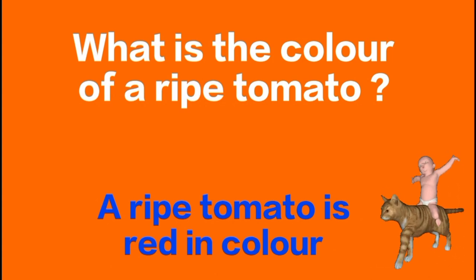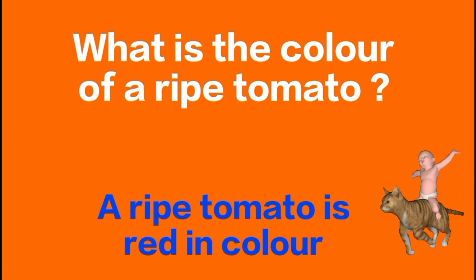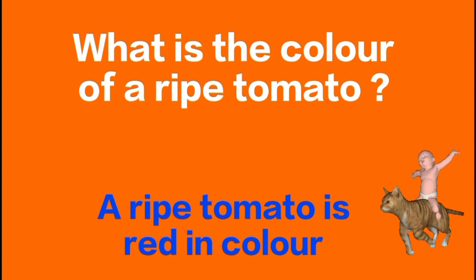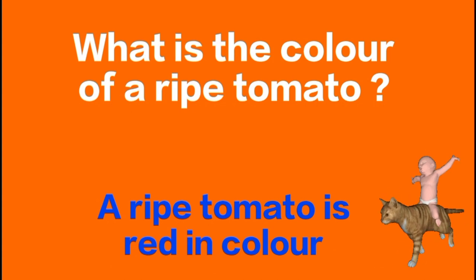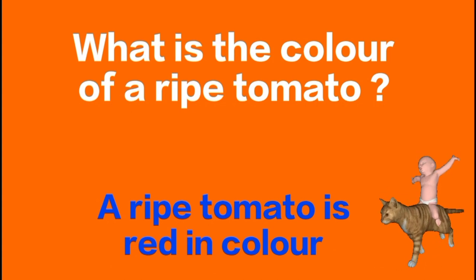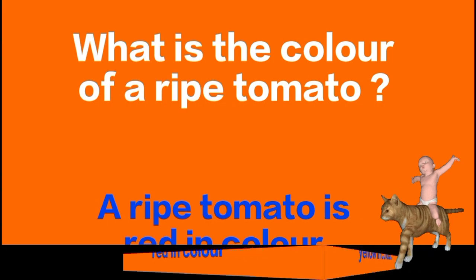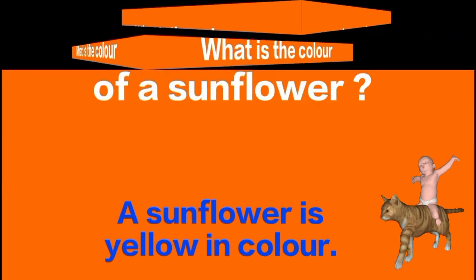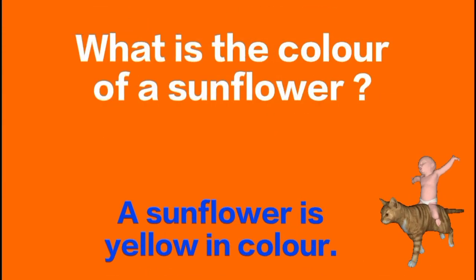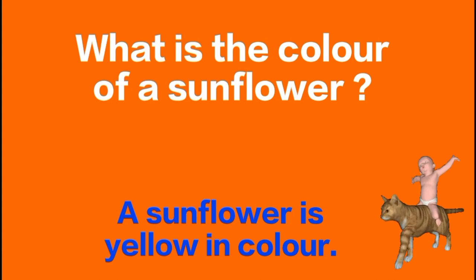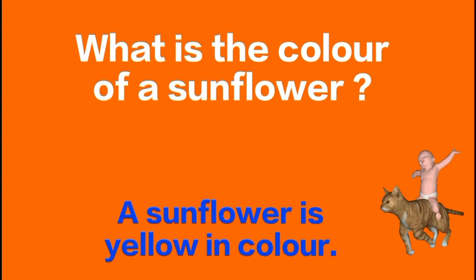What is the color of a ripe tomato? A ripe tomato is red in color. What is the color of a sunflower? A sunflower is yellow in color.